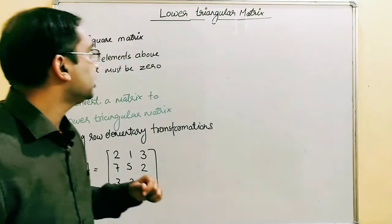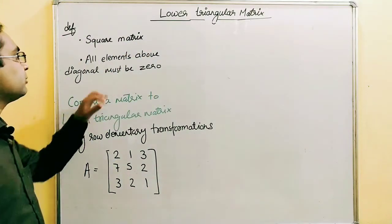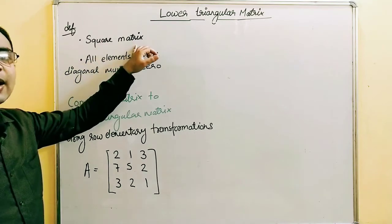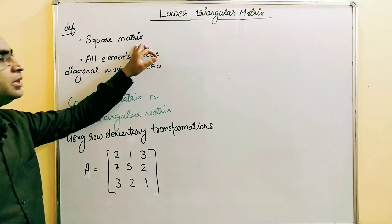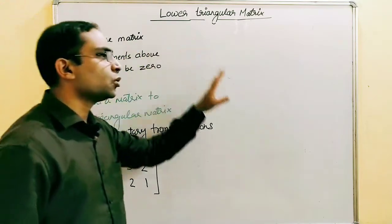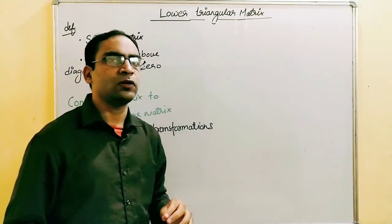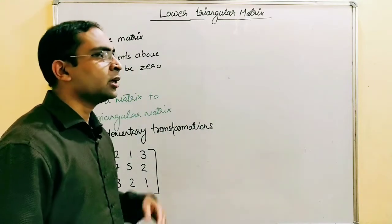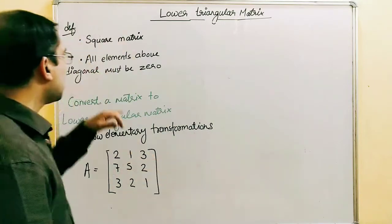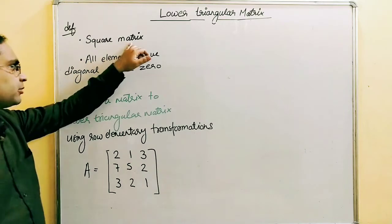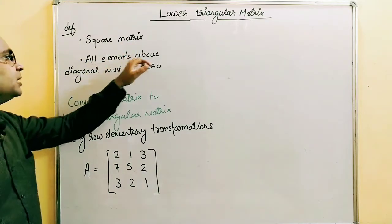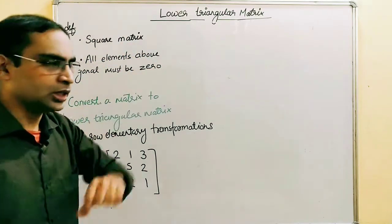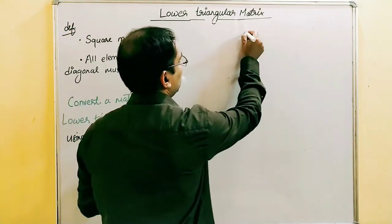The definition of lower triangular matrix: the first thing is it should be a square matrix — that means a matrix with the same number of rows and same number of columns, for example a 3x3 or 4x4 matrix. It has to be a square matrix and all elements above the diagonal must be zero.